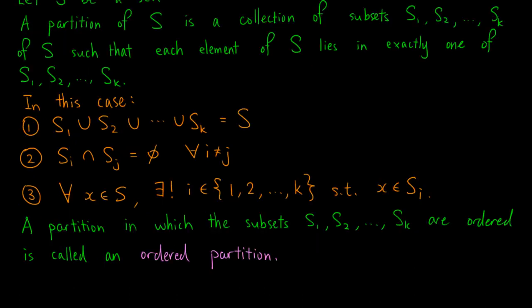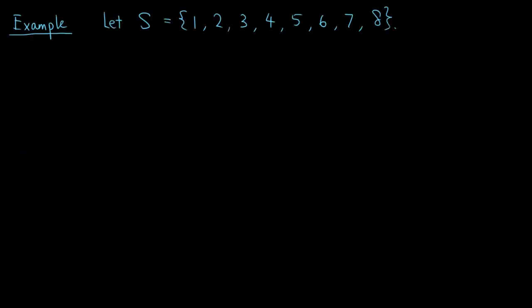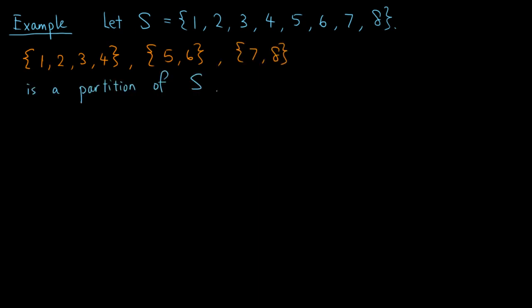We say that a partition is an ordered partition if the subsets S1, S2, up to Sk are ordered. For example, if S is the set containing the numbers 1 to 8, then a collection of three subsets — the first containing the numbers 1 to 4, the second containing 5 and 6, and the third containing 7 and 8 — is a partition of S.